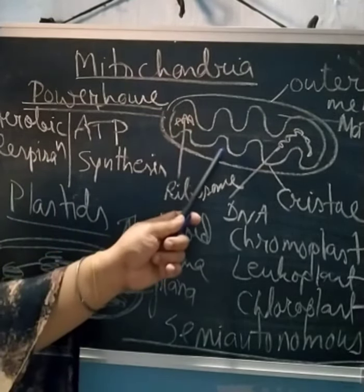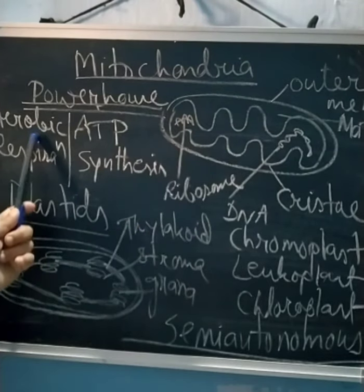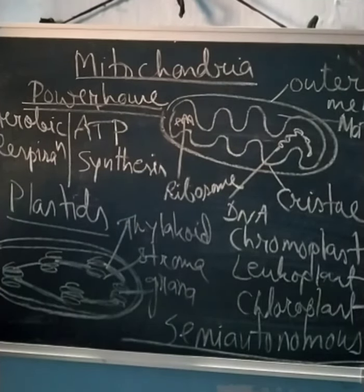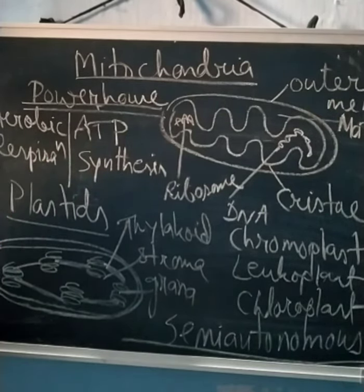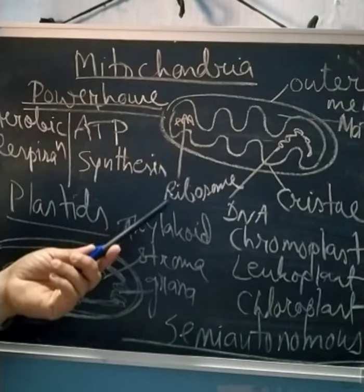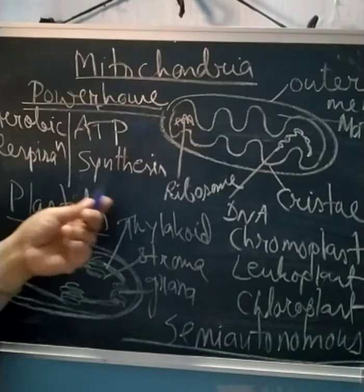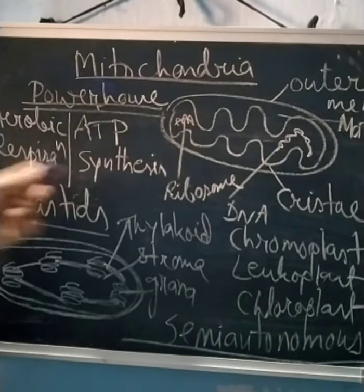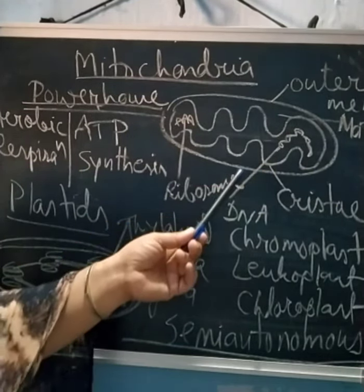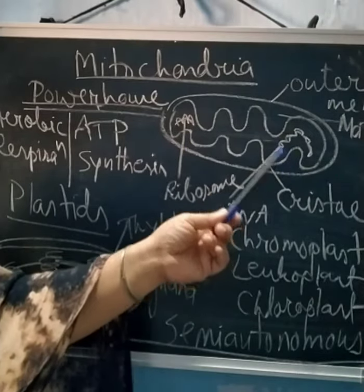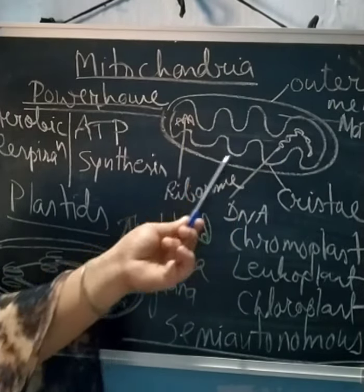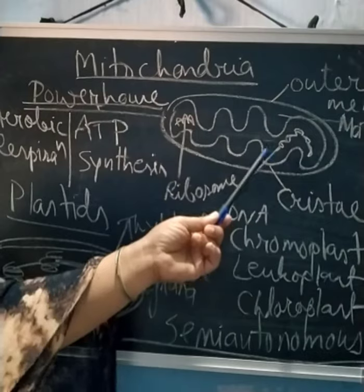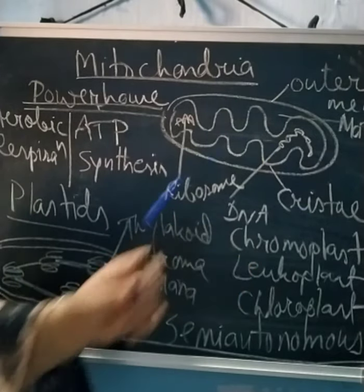ATP is synthesized inside the mitochondria, which has enzymes that help in aerobic respiration. Aerobic means it always acts when there is an oxygen supply — we are all aerobic organisms. Aerobic respiration happens inside the mitochondria. Structurally, it has an outer membrane and an inner membrane that is folded, and that folded portion is termed cristae.